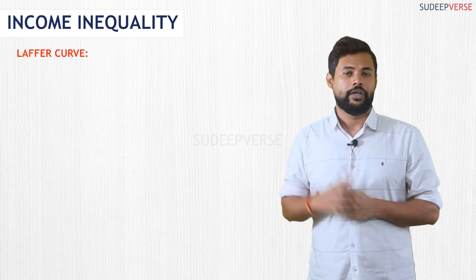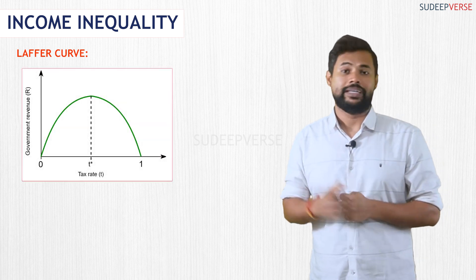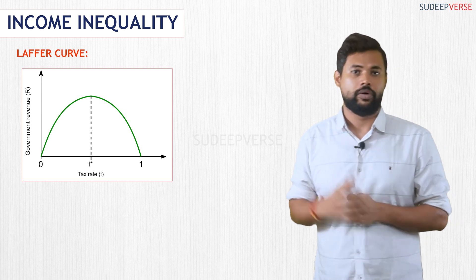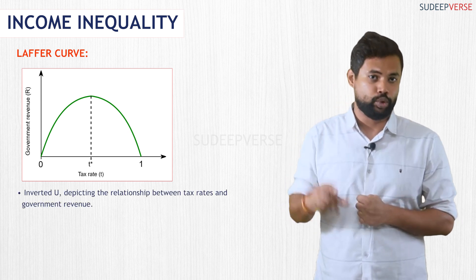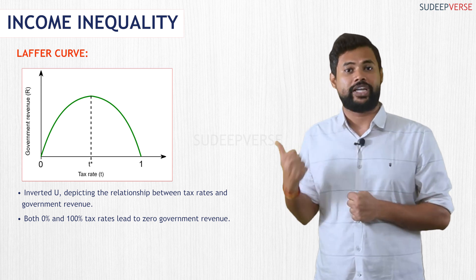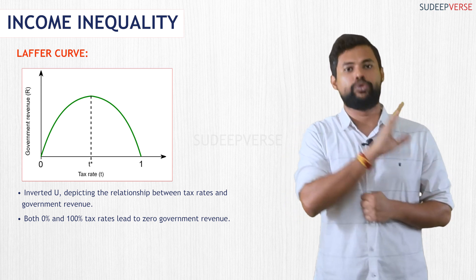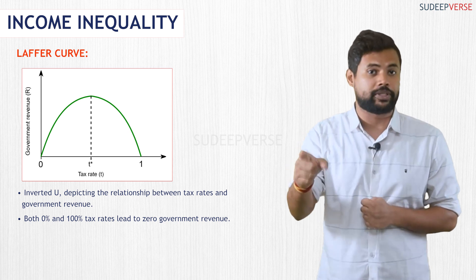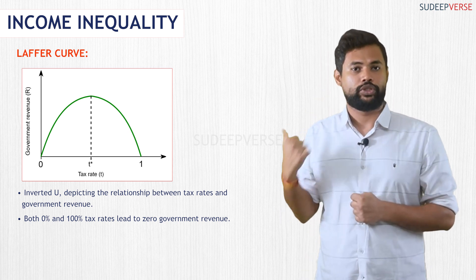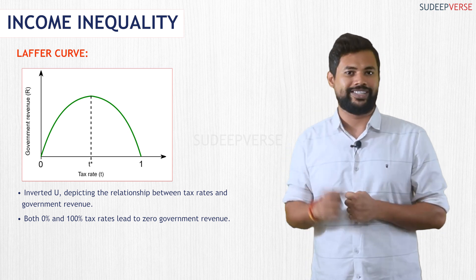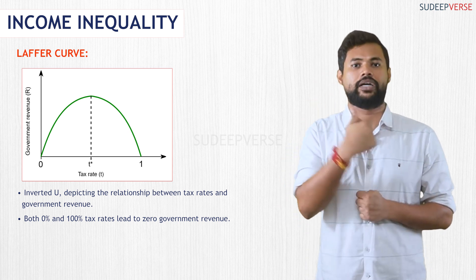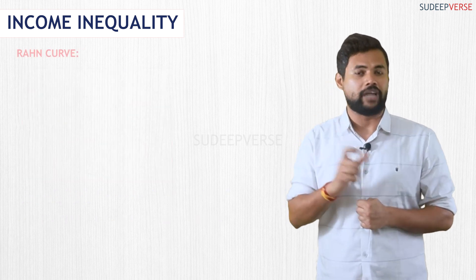The next is the Laffer curve. The Laffer curve shows the relationship between tax rates and government revenue. It is an inverted U-shaped graphical representation. This is because if the tax rates are at 0%, the government revenue is 0, and if the tax rates are increased to 100%, even then the revenue is 0. That is why the Laffer curve always shows an inverted U-shape, and it gives us the relationship between tax rates and government revenue.